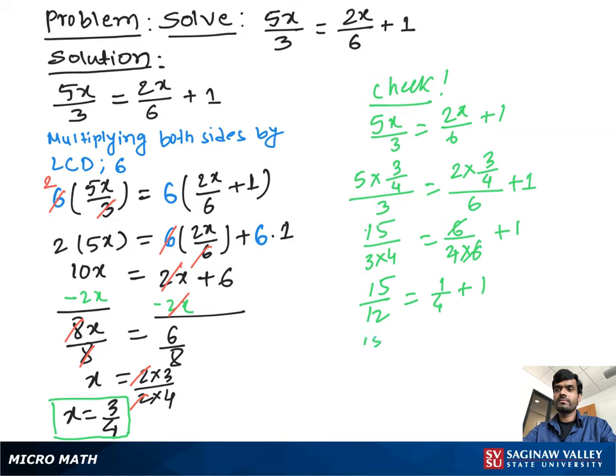Now 15 over 12 equal to, we're taking lowest common denominator LCD which is 4, so 1 plus 4 over 4.